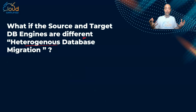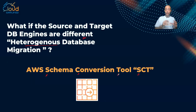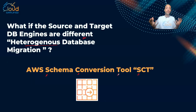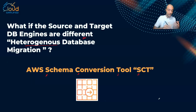The problem with heterogeneous migration is the data structure and schema differences. That's why AWS offers a service called SCT, or Schema Conversion Tool. So in the exam, if you see a question about migrating a database with different engine types, always think about SCT. The Schema Conversion Tool helps you migrate between two different database engines with two different schemas.